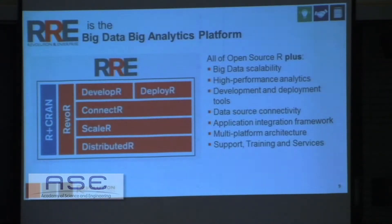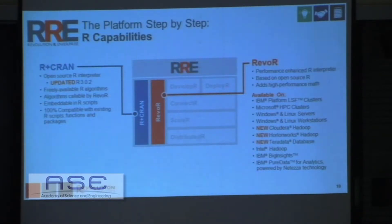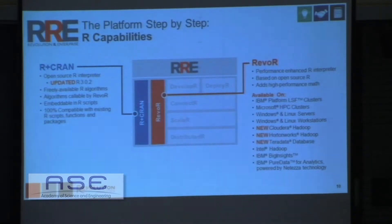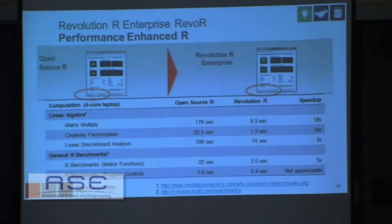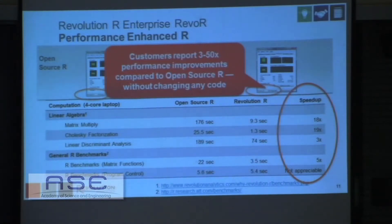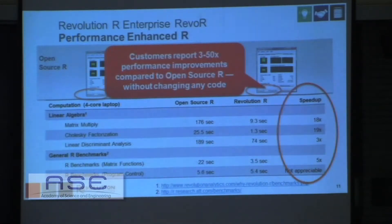I'll give you a little tour through the various aspects of the Revolution R Enterprise product. We start with our foundation, which is open source R plus a selection of the most useful contributed packages from CRAN, the Comprehensive R Archive Network. We take the source code and recompile it, linking it with the Intel Math Kernel Libraries. That speeds up processing of any matrix operations within R, and can result in anywhere from a 3 to 50x speed improvement just by having that linking.